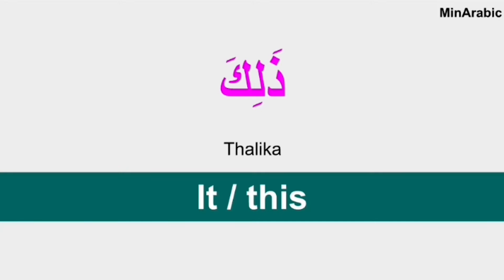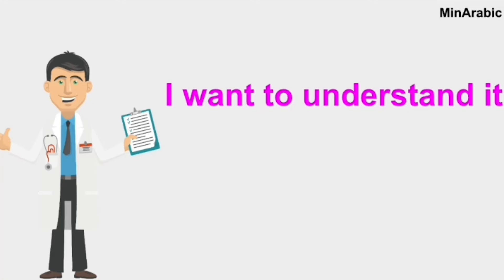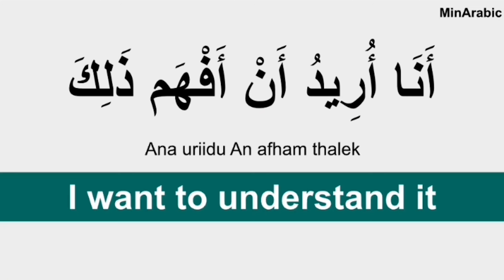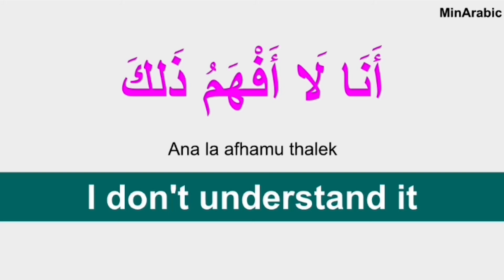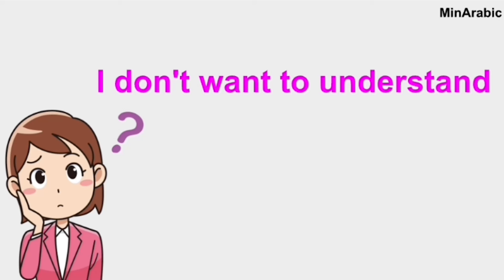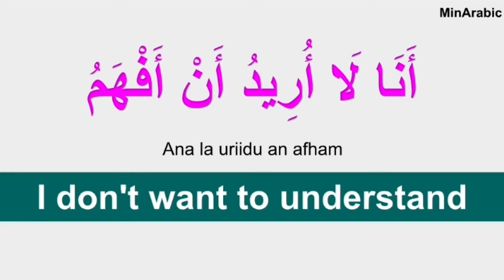Great, you're doing a great job. Now how to form 'I want to understand Arabic'? We've seen how to say 'I want to understand,' just add the Arabic word. It's ana ureidu an afham al-arabiyya. Ana means I, ureidu means want, an means to, afham means understand, and al-arabiyya means Arabic. Ana ureidu an afham al-arabiyya. Amazing.